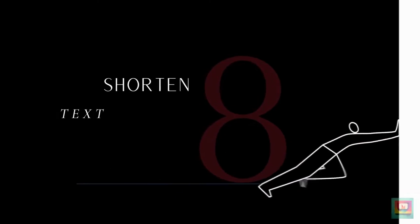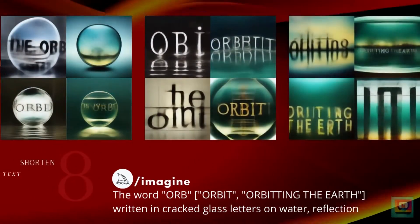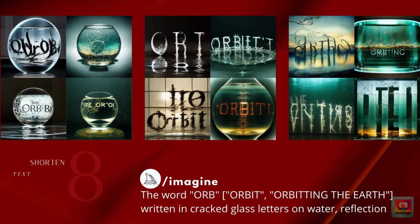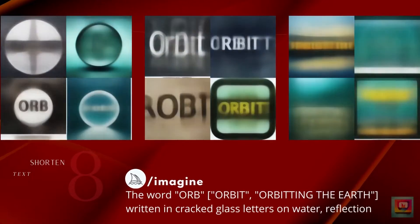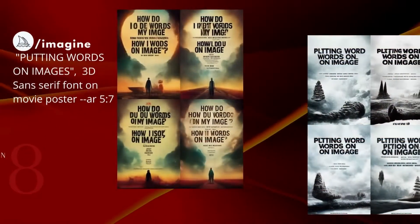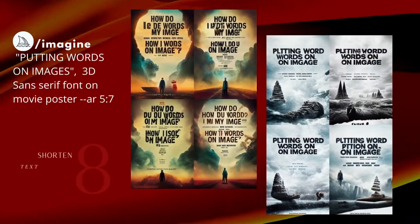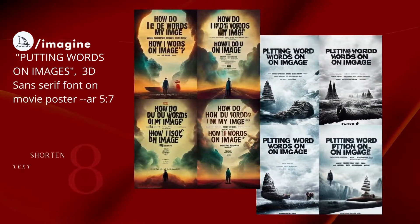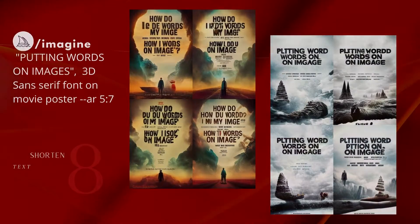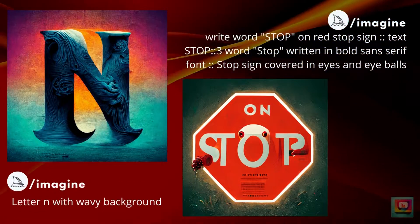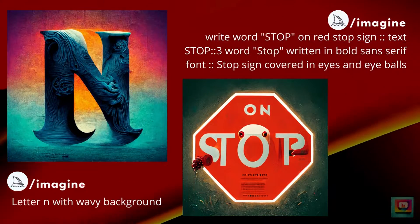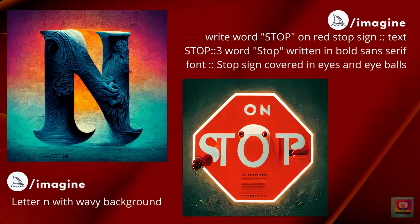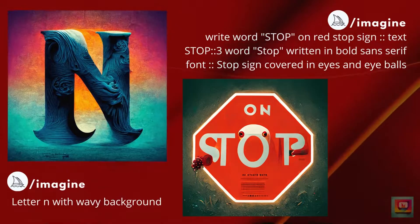Tip 8: Shorter text strings are generally easier to achieve. The longer the text, the more ways it can go wrong in the image generation process. Edit your text and use simple words. For this video, I created movie posters and started with 'how to put words on images,' then shortened it to 'putting words on images' — and that was still pretty adventurous. Single letters are relatively easy for AI image generators, and you'll have a better chance with common words or phrases like 'hello,' 'stop,' or 'happy birthday.'